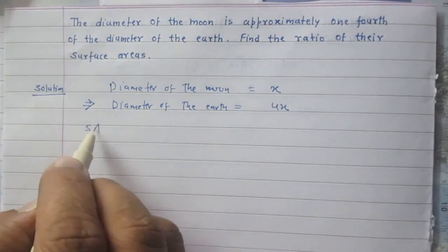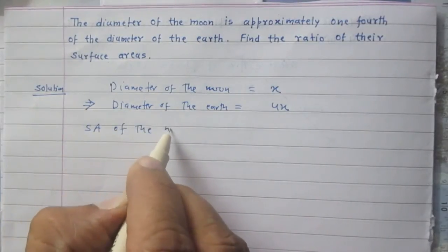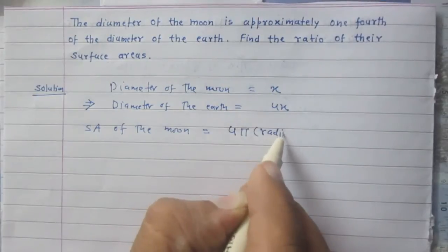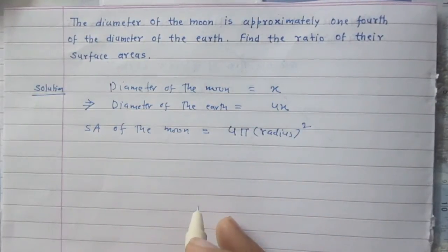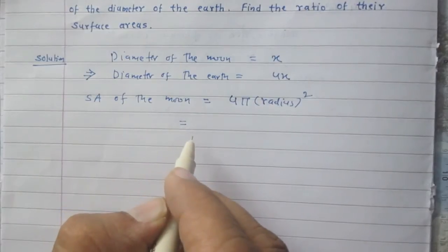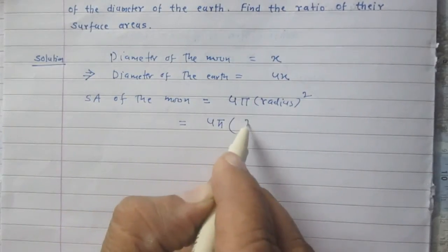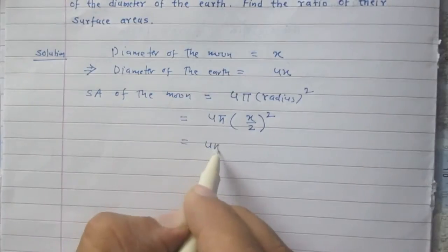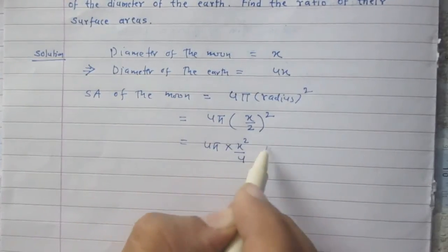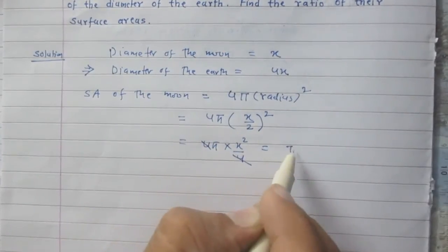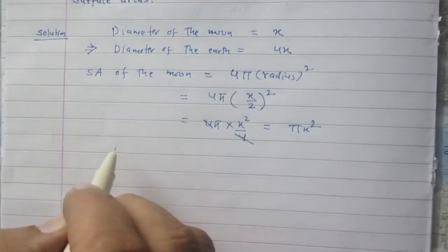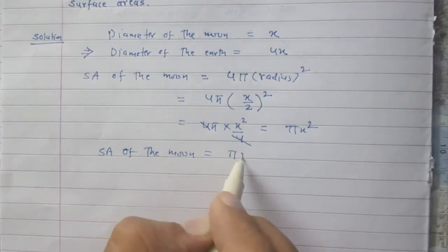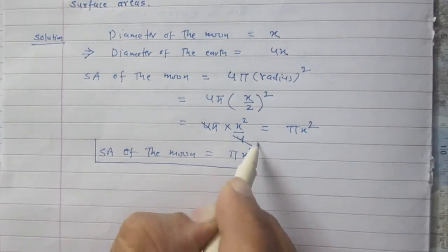The surface area of the moon, according to the formula, is 4π times radius squared. We know that radius is half of the diameter. So it is 4π times (x/2) squared, which gives us 4π times x²/4, or simply πx². So the surface area of the moon is πx², where x is the diameter of the moon.